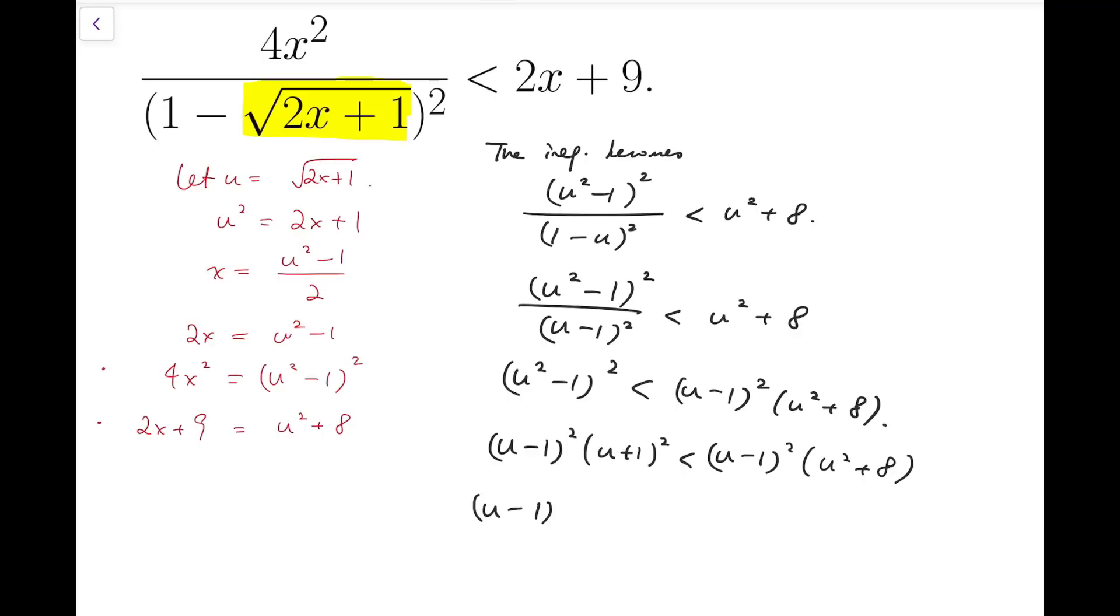So I have u minus 1 whole squared to be multiplied by u squared plus 2u plus 1 minus u squared minus 8, minus the whole quadratic expression. And this whole product is less than 0. So we can further simplify. u minus 1 whole squared multiplied by 2u minus 7 is less than 0.